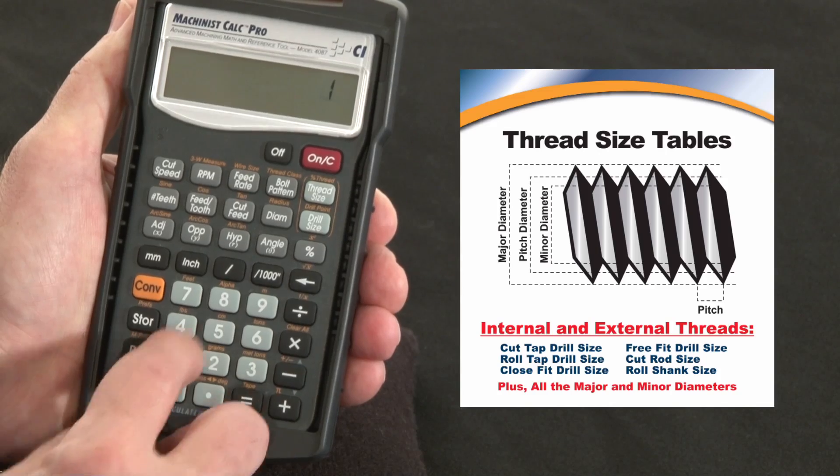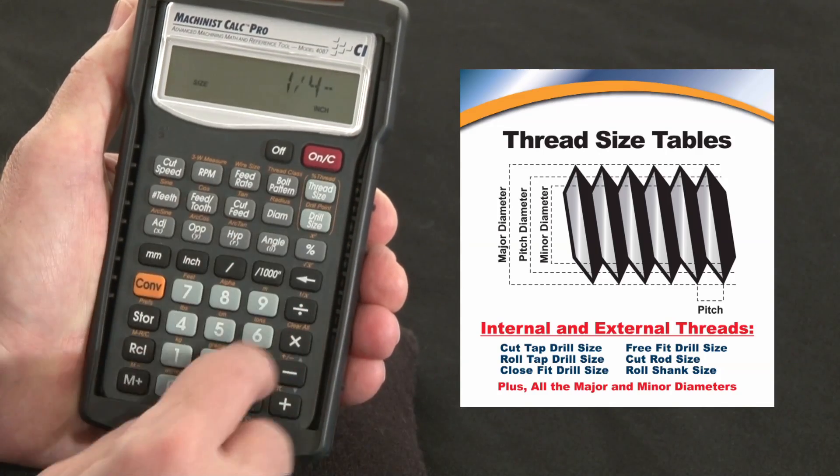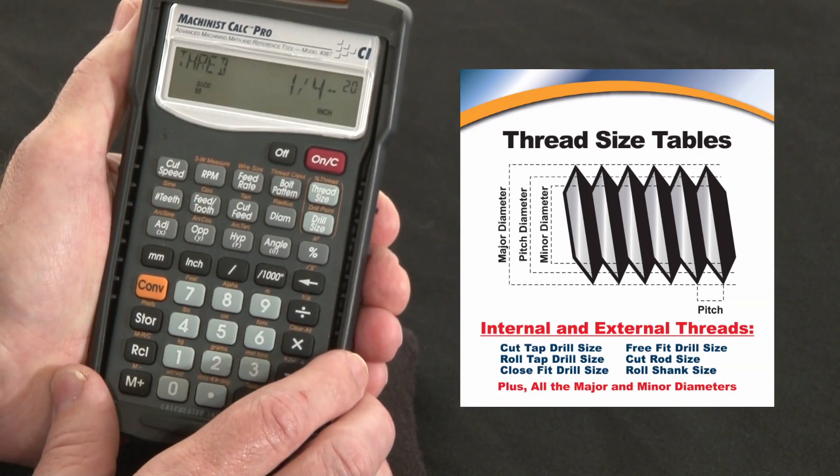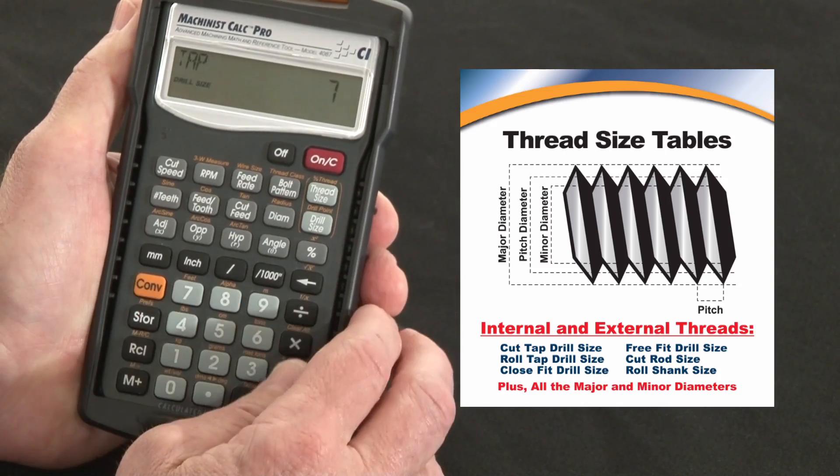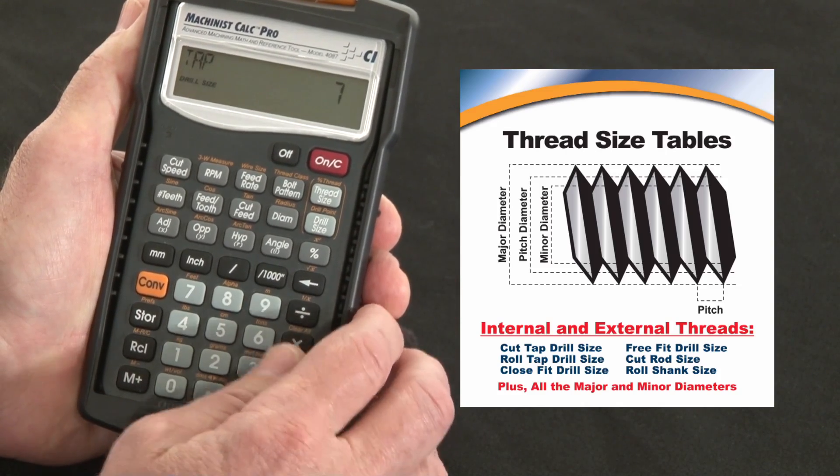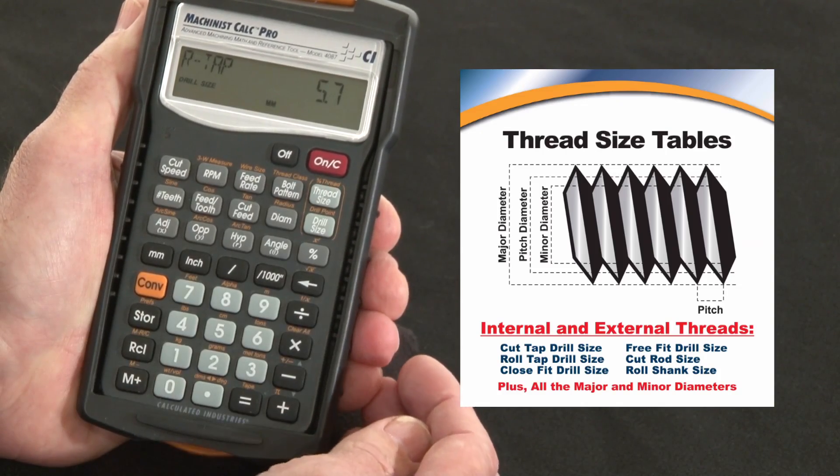Let me start with something you know, say 1.25 for thread pitch. So starting from here, it shows me that my cut tap is going to be a size 7, my roll tap is going to be a 5.7mm,